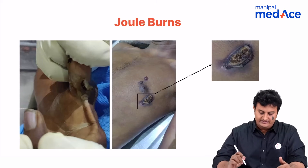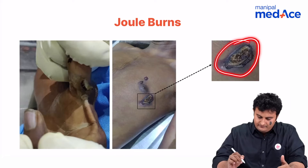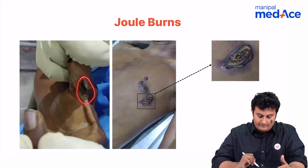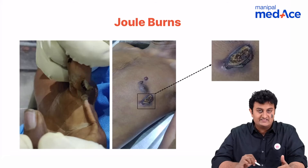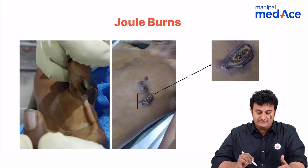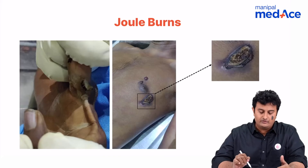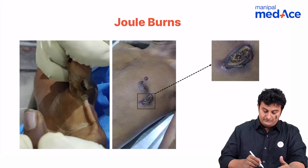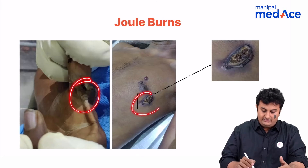Look at this jewel burn over here — it is right next to this gentleman's chest. There is one over here in the web space also. This is the same case, same individual. There is one jewel burn on his hand and one on his chest as well. This gentleman was an electrical worker for the government and he was working near a transformer when he grabbed onto an unearthed wire, and this is what happened. So there is an effect both on the hand and on the chest.